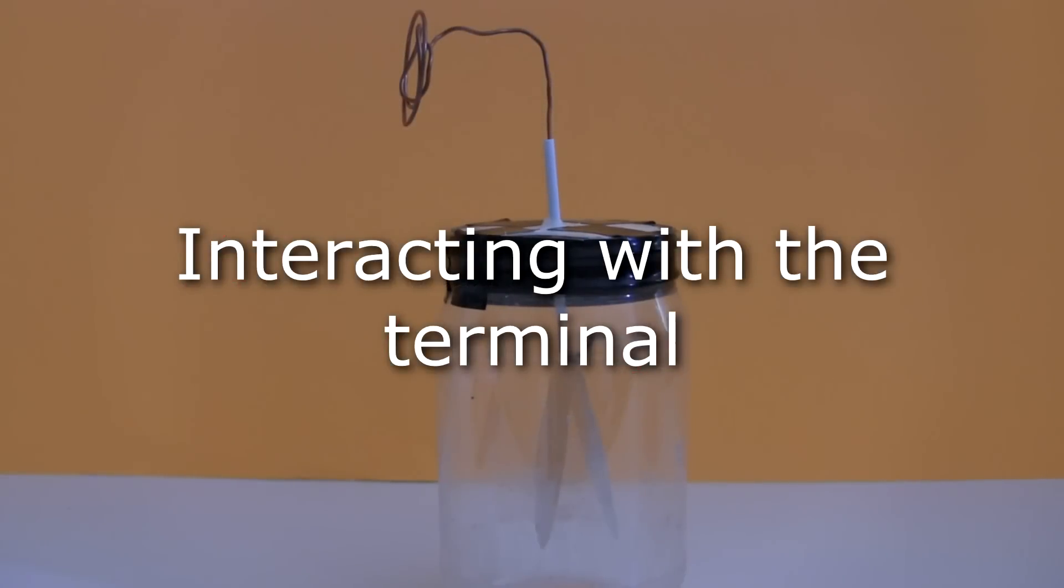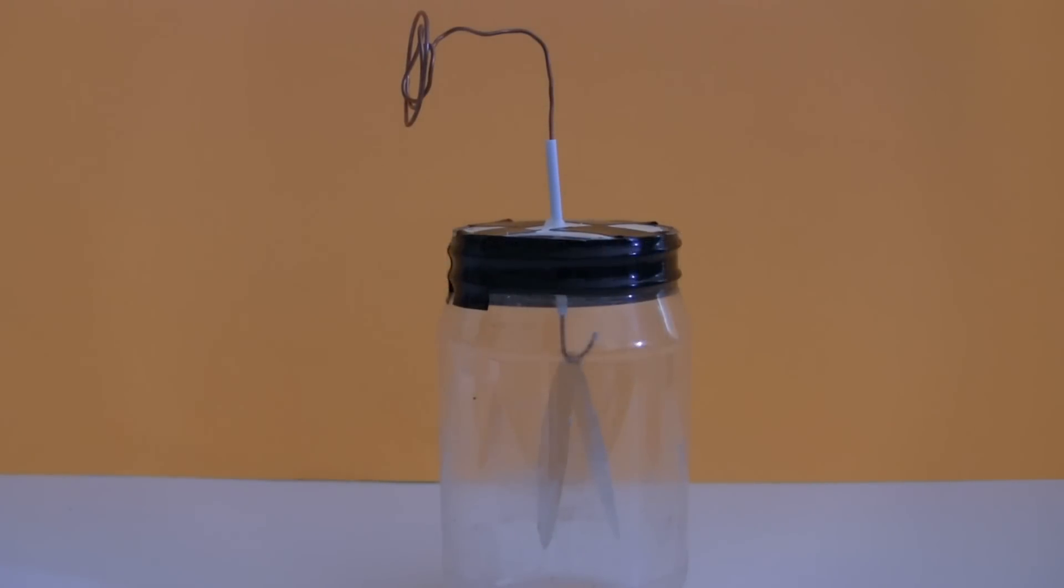Now watch what happens to the leafs of the electroscope when I bring objects close to the terminal of the electroscope. So here's the magnet. Notice in this case the leaves don't move in one direction. Instead they both move closer together.